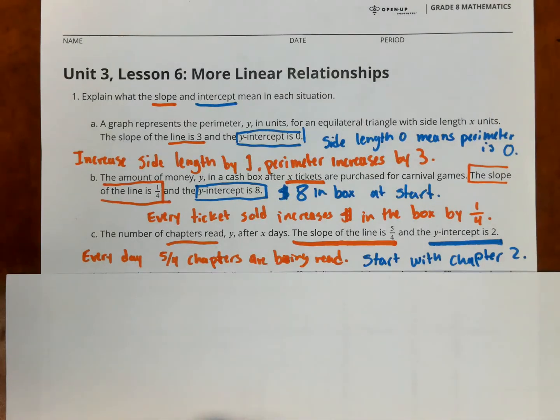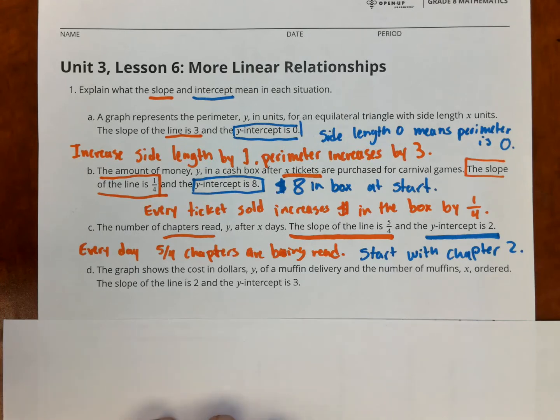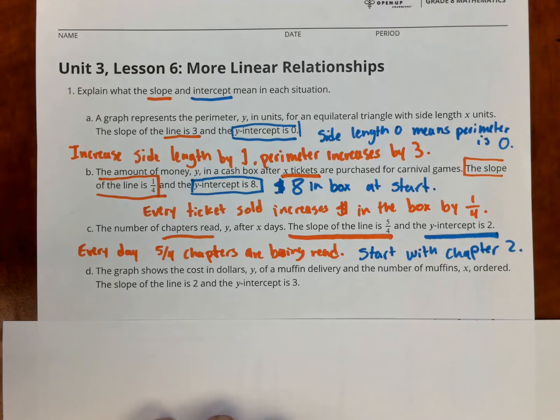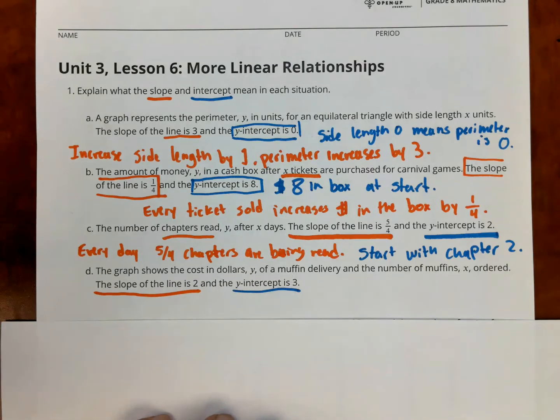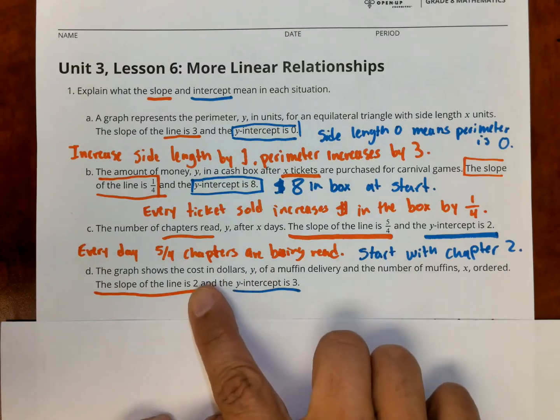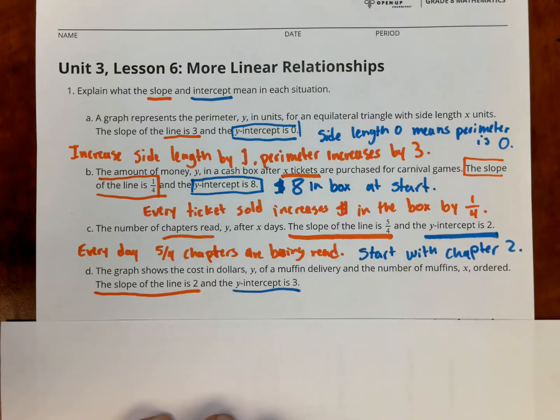Now let's look at part D. The graph shows the cost in dollars y of a muffin delivery and the number of muffins x ordered. The slope of the line is 2. The y-intercept is 3. Thinking about this problem like the ones before, the slope, I want you to see every what? Every, in this problem, every muffin is $2 since x is muffins.